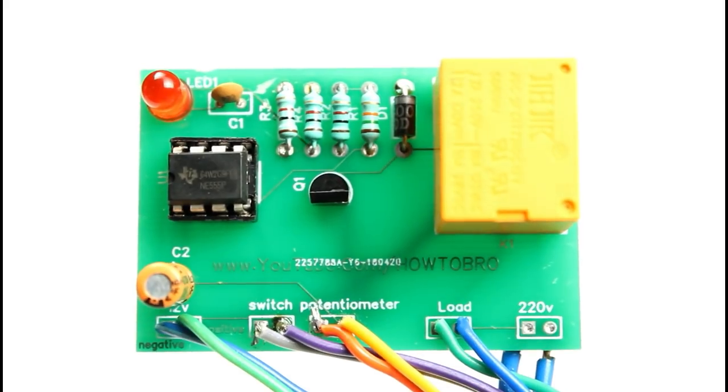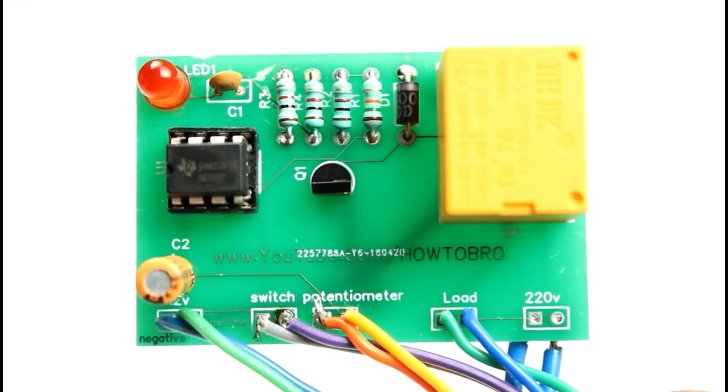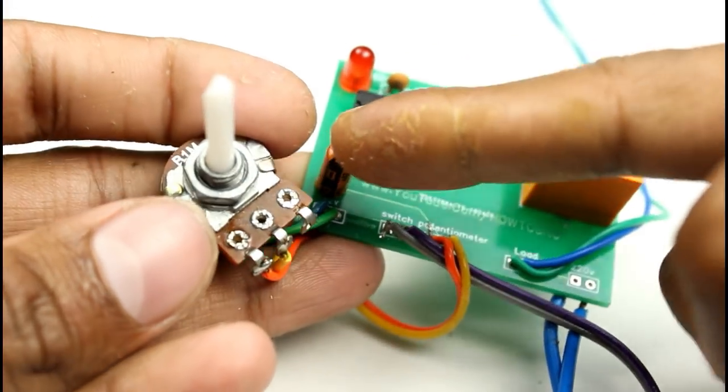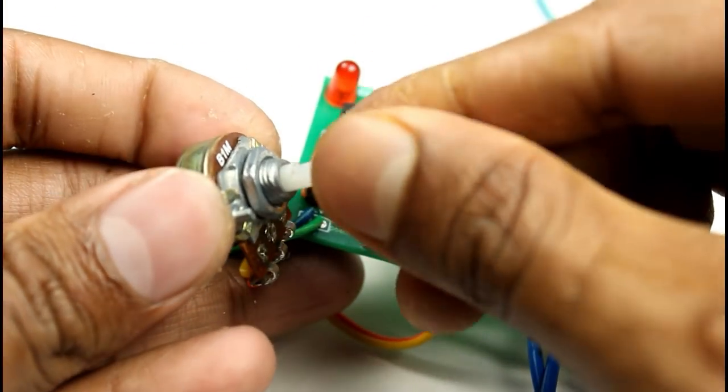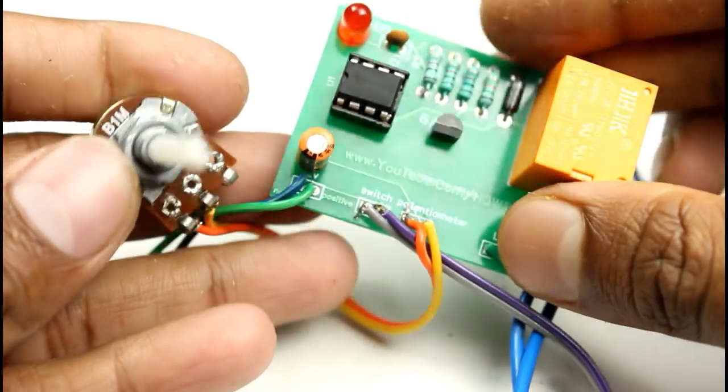If you need more time, like two hours or four hours, you have to change this capacitor and this potentiometer. To calculate the time, download this timer calculator. I put the link in the description below.